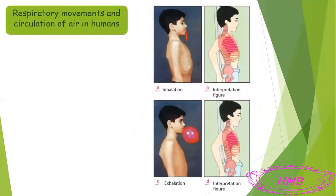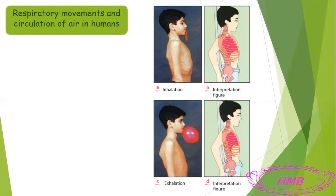Now let's look at human respiratory movements and circulation of air. Pay attention to this picture — we have a boy, and we are showing the respiratory movements while he is breathing. In the first diagram, figures A and B, the boy is inhaling, meaning he is taking oxygen from the air and this oxygen enters his body. We can see a movement done by his chest or thoracic cage.